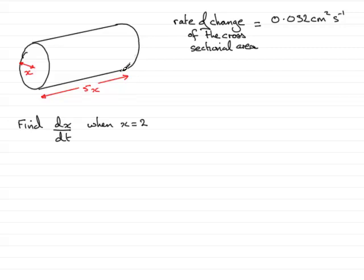And because it's being heated it's expanding and we're told that the rate of change of the cross sectional area is growing at a constant rate of 0.032 cm² per second. And in this question we're asked to find the rate of change of the radius at time t when x is 2.